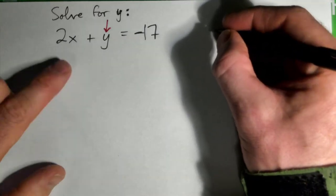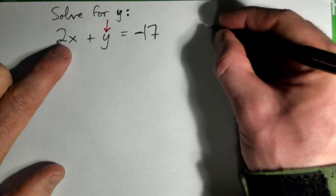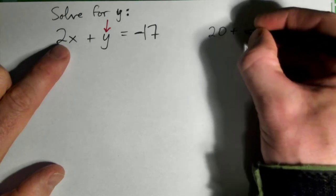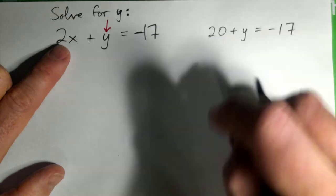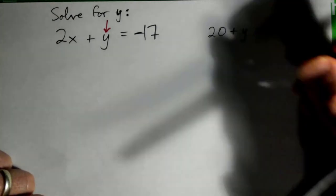What if x was like 10 and so 2x would be 20, right? So what if you had 20 plus y equals negative 17, okay? Solve this one for y and tell me what you get.